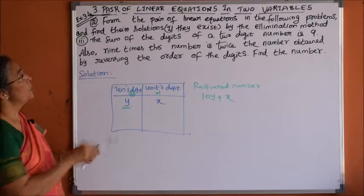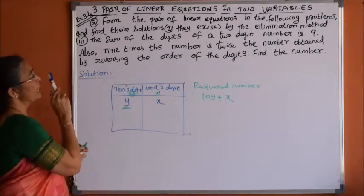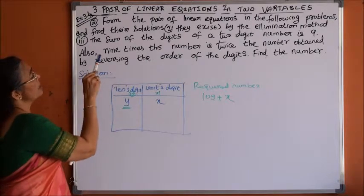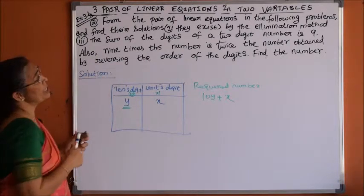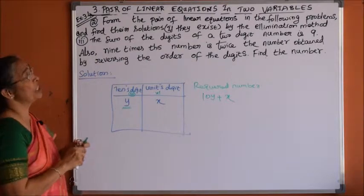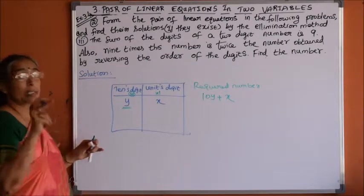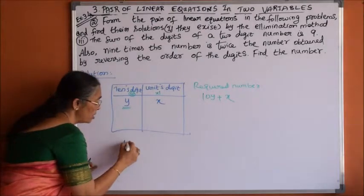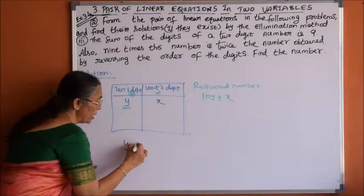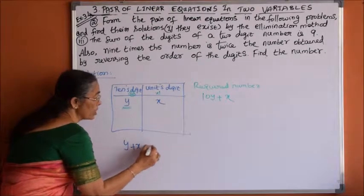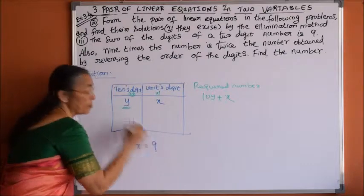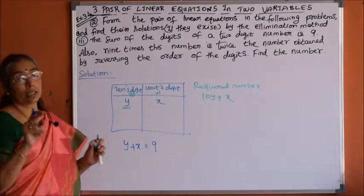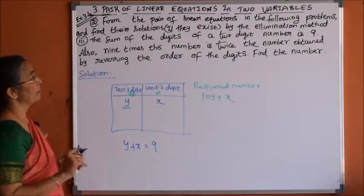First condition: the sum of the digits of a 2-digit number is 9. So the sum of the digits, that is y plus x, equals 9. This is condition number 1.